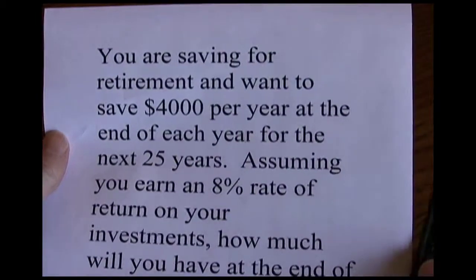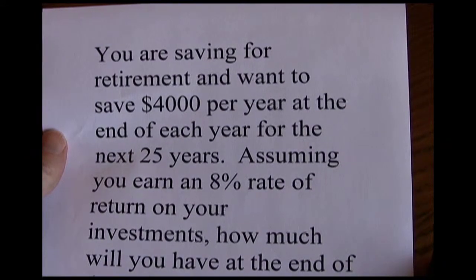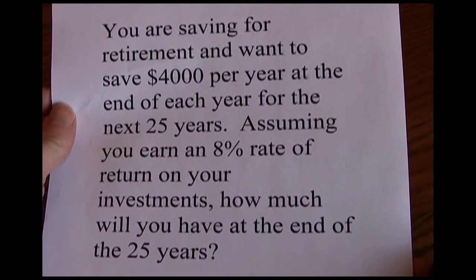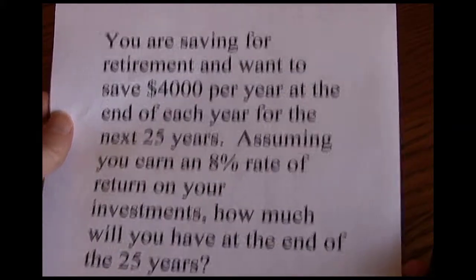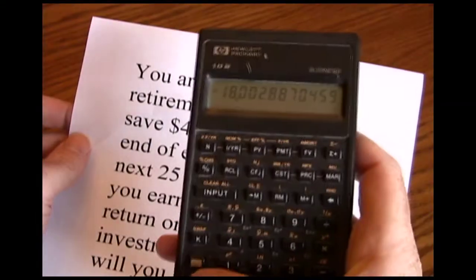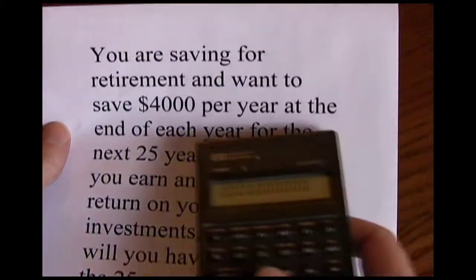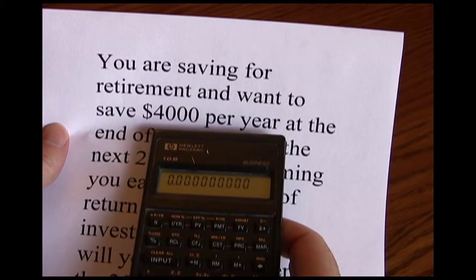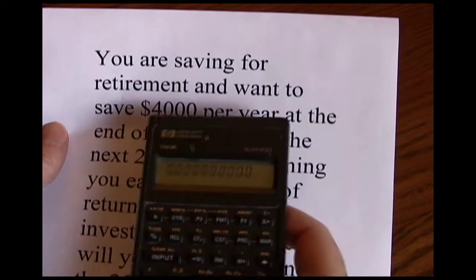In our next problem, we're saving for retirement and want to save $4,000 per year at the end of each year for the next 25 years. We're going to earn an 8% rate of return on our investments. How much are we going to have at the end of the 25 years? Now the first thing we notice here is $4,000 per year — the 'per year' tells us that we're dealing with an annuity.